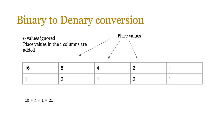You still need to know how to convert binary to denary. It's pretty straightforward — zero values are ignored, and place values in the one columns are added. For example, we take the place value of 16, add the place value of 4, and add the place value of 1, giving us 16 + 4 + 1 = 21.